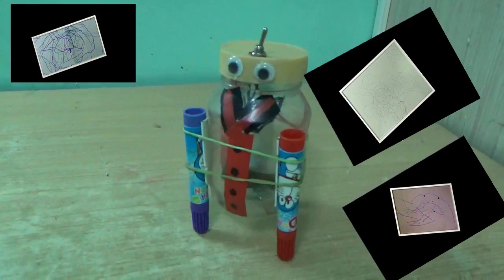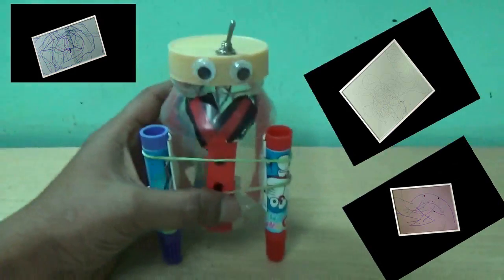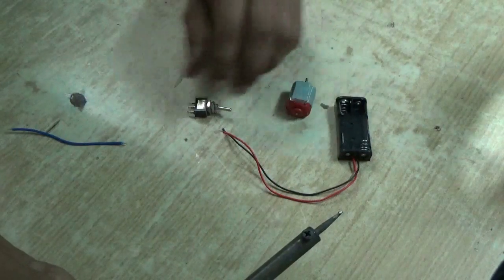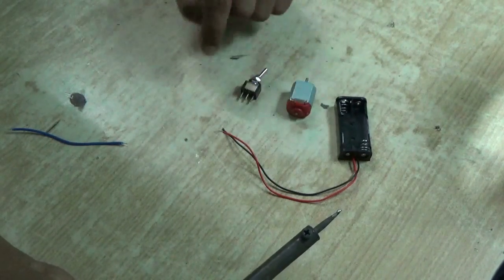Hi guys, this is my drawbot which can draw random pictures. To make it you need a battery holder, a DC motor, and a switch.